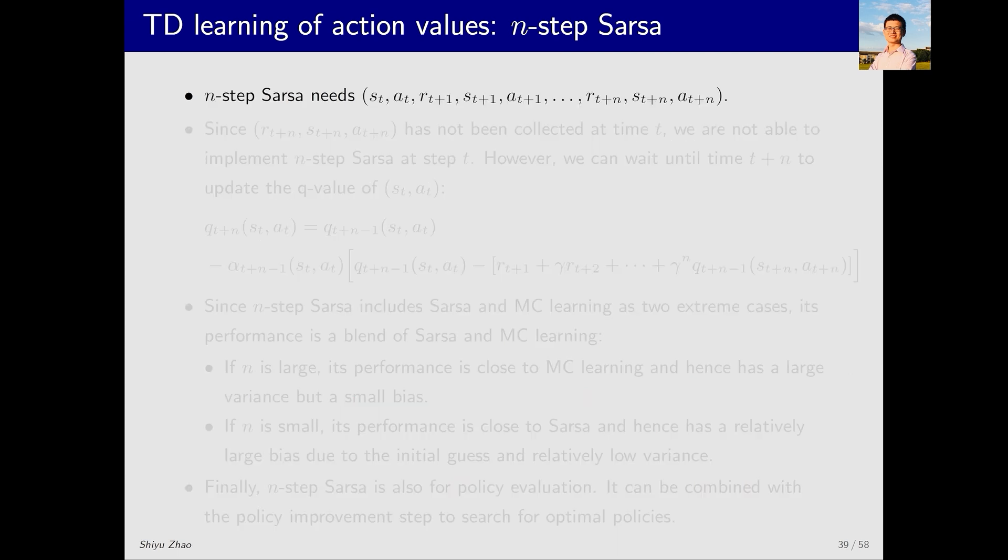Now let's analyze some properties of N-step SARSA. First, all algorithms require experience samples. SARSA requires five samples: ST, AT, RT plus 1, ST plus 1, and AT plus 1. At time T, we can obtain these five samples and use them directly. The Monte Carlo method, on the other hand, requires an infinite number of samples, or samples until the episode ends, to calculate the action value for ST at time T.